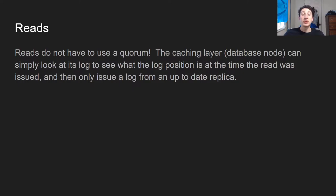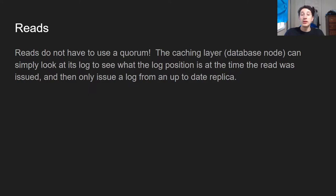In terms of reads, they don't need to use a quorum. For strong consistent reads from the database node, the caching layer takes the read request, looks at its log — which we know is up to date since it's the single caching layer — sees the current position of the log, checks all of the replica storage nodes, finds the one that is up to date as of that log position, and makes a read from it. In that sense we can get strongly consistent reads out of this leader database caching mode.